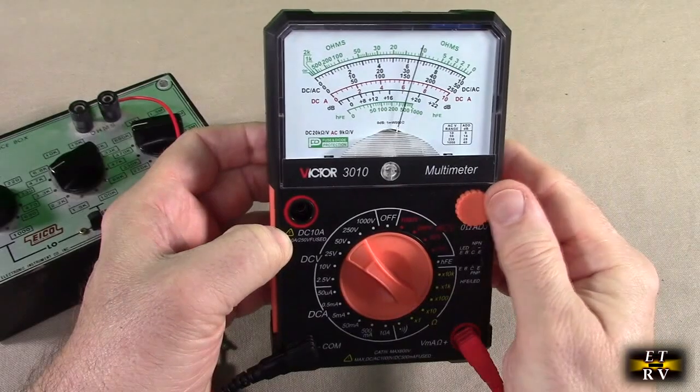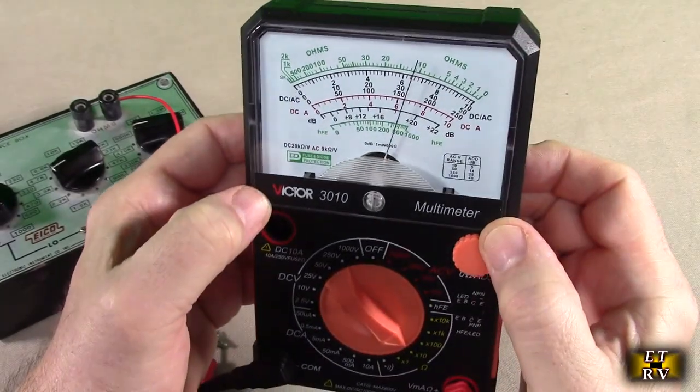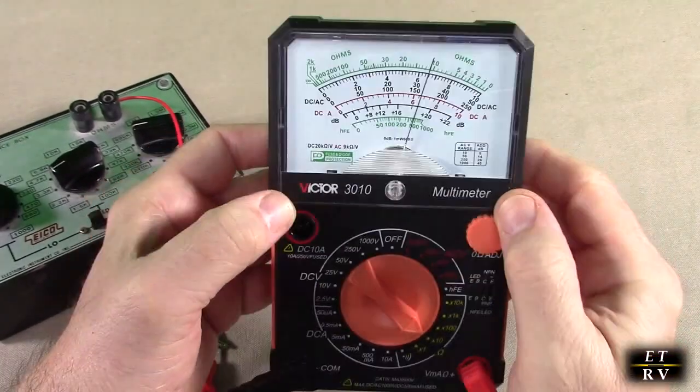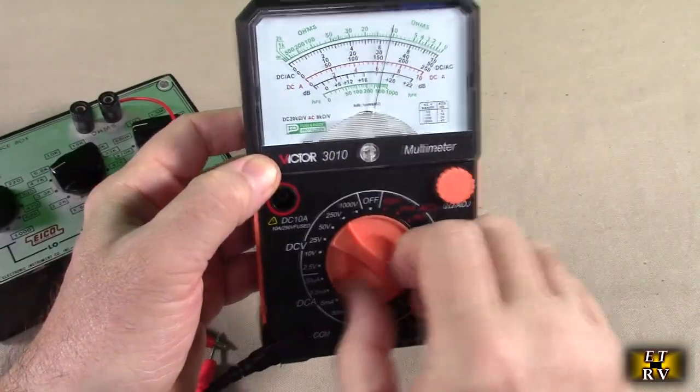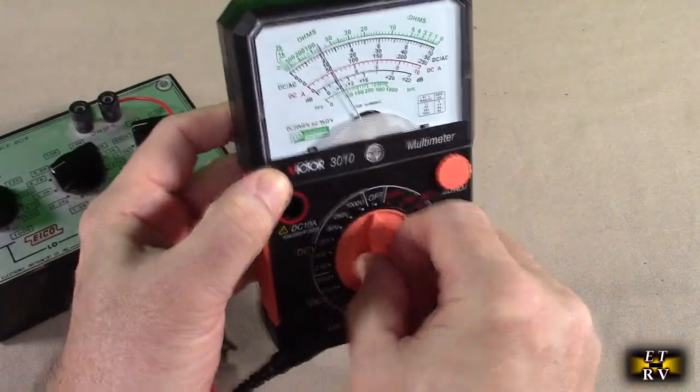And then you can accurately measure resistance on this meter. I love this analog display. I love that it's oversized. It's just really nice to see something like that.